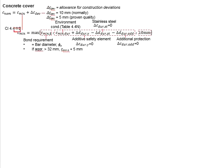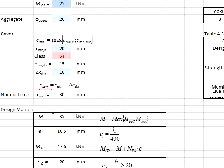The c_min is the maximum of 20, 15, and 10. The largest value is the bar size, which is 20. This gives the nominal cover of 20 plus 10, which equals 30 mm, as calculated here.